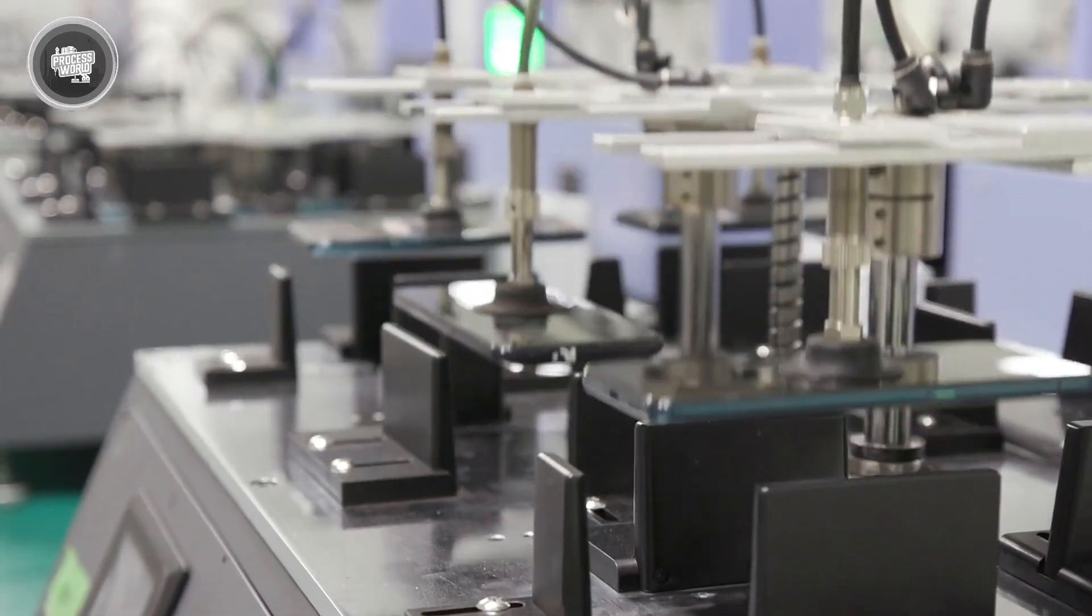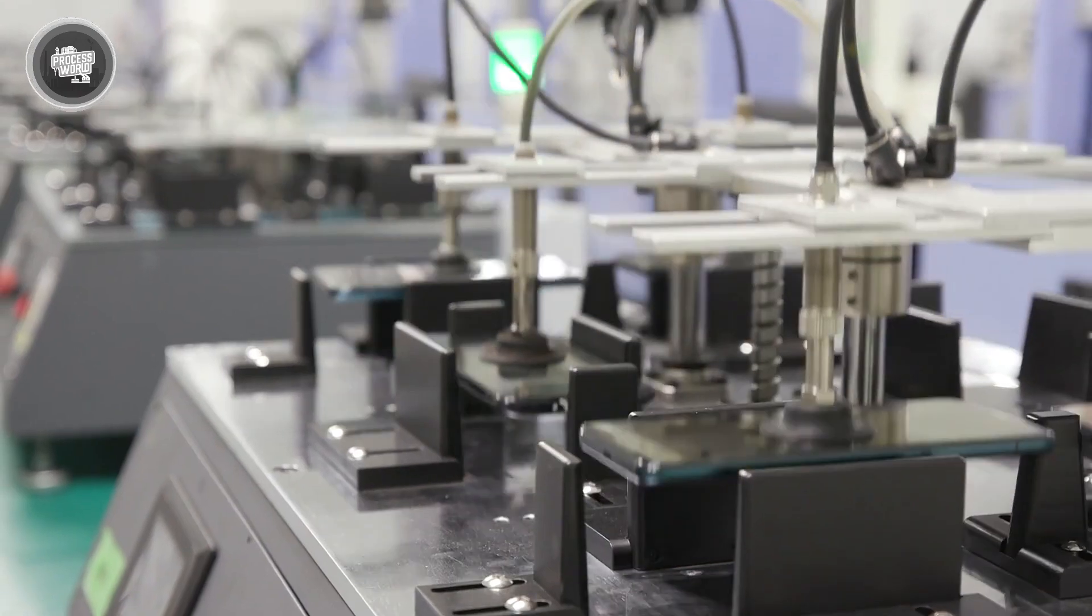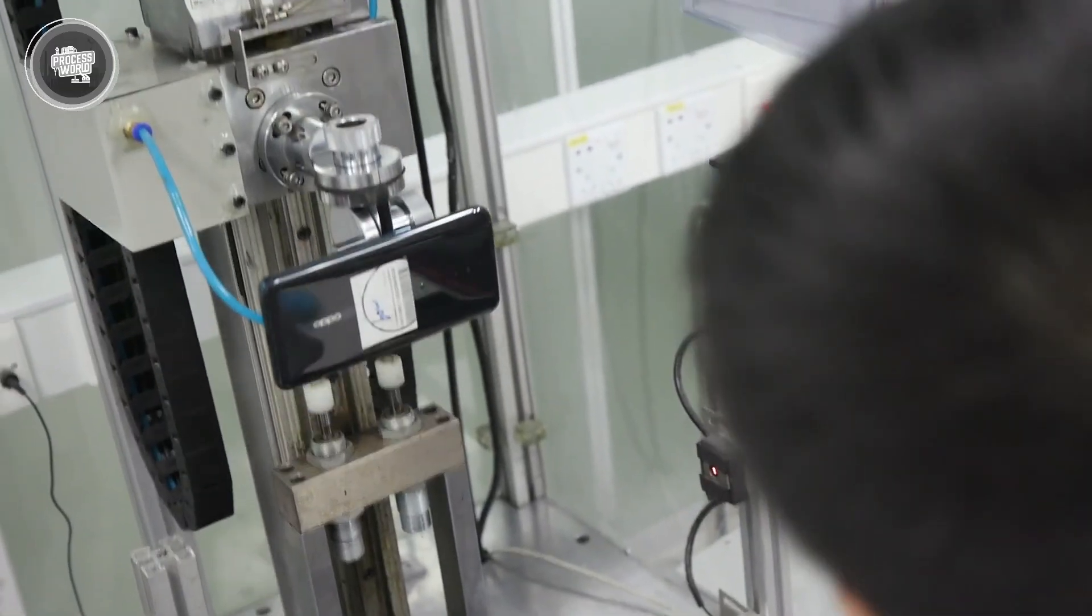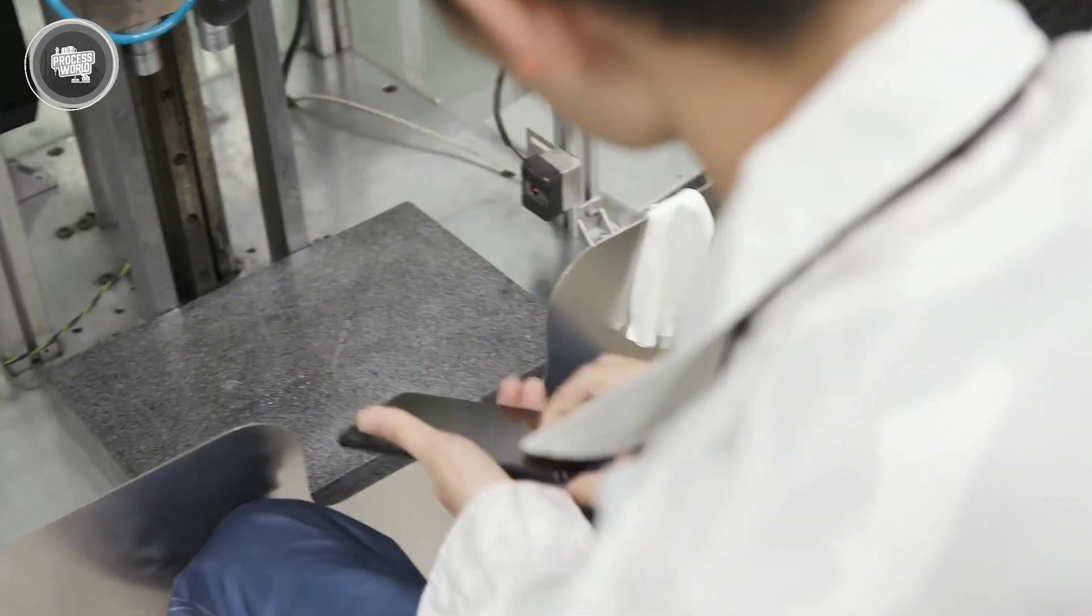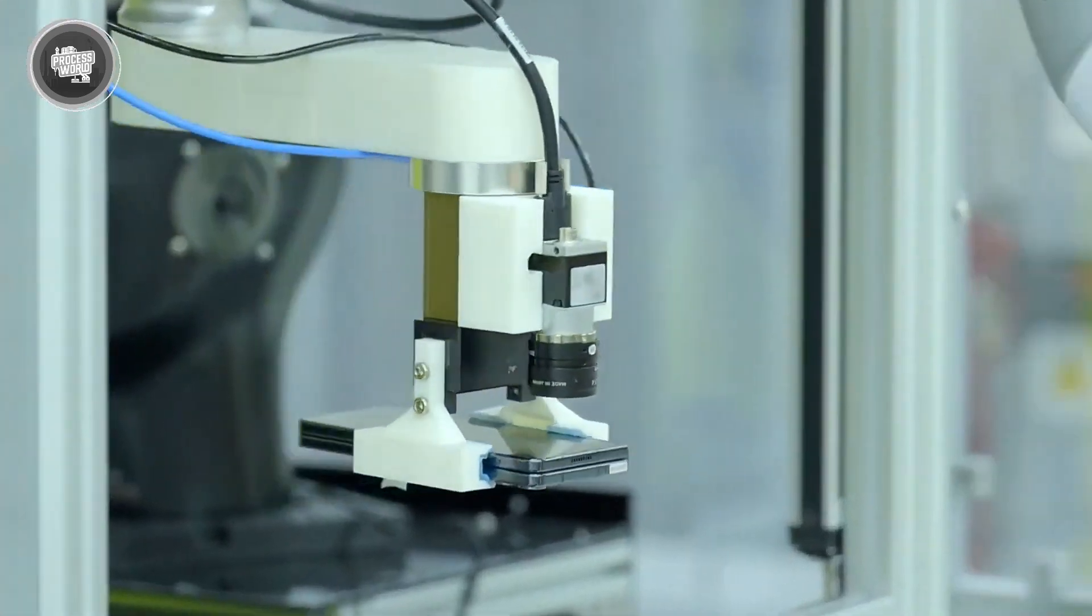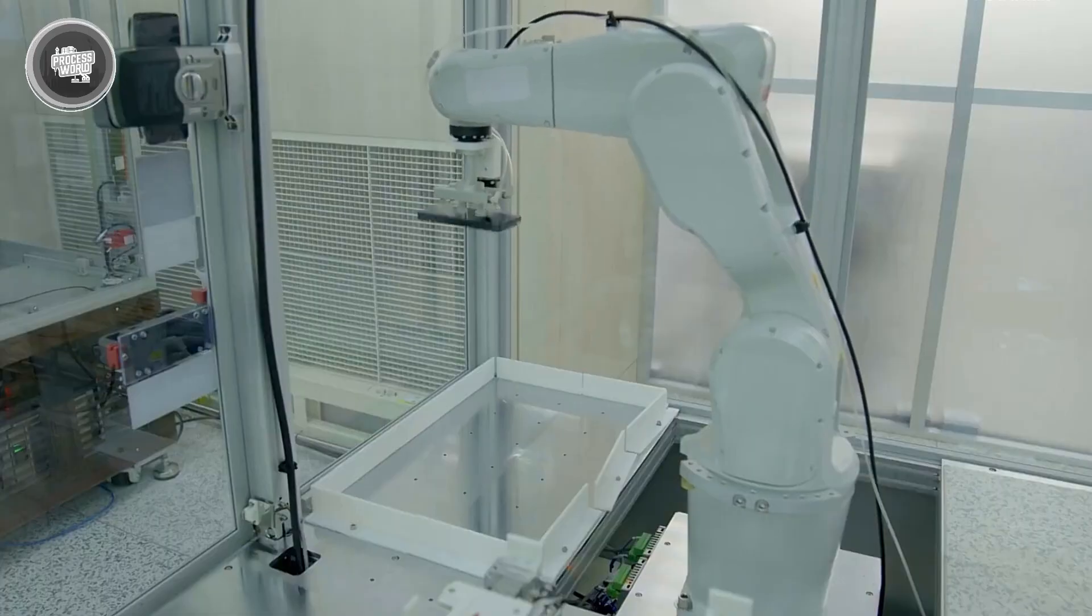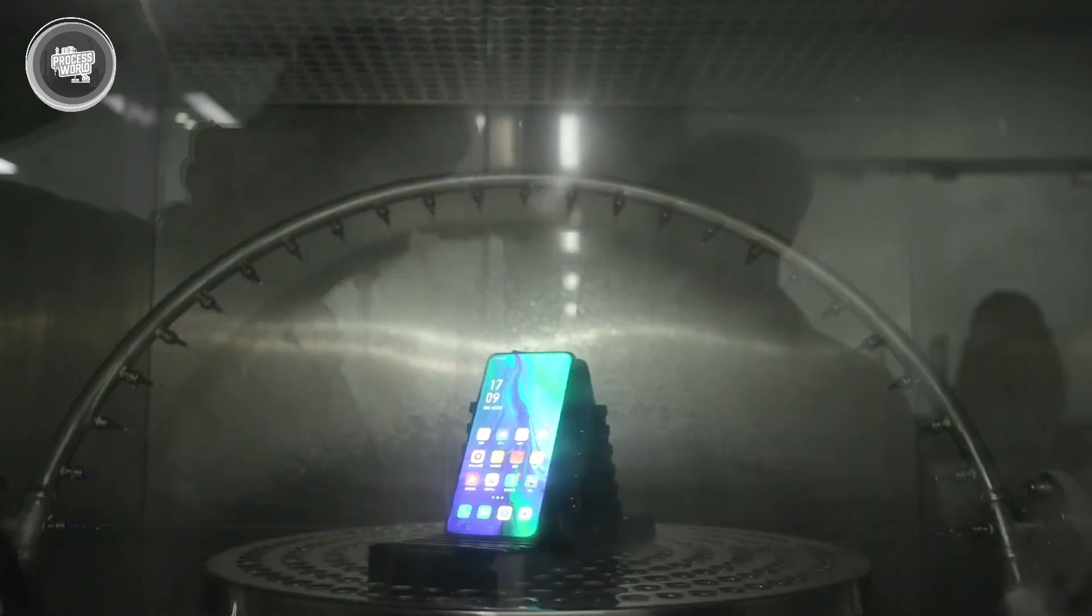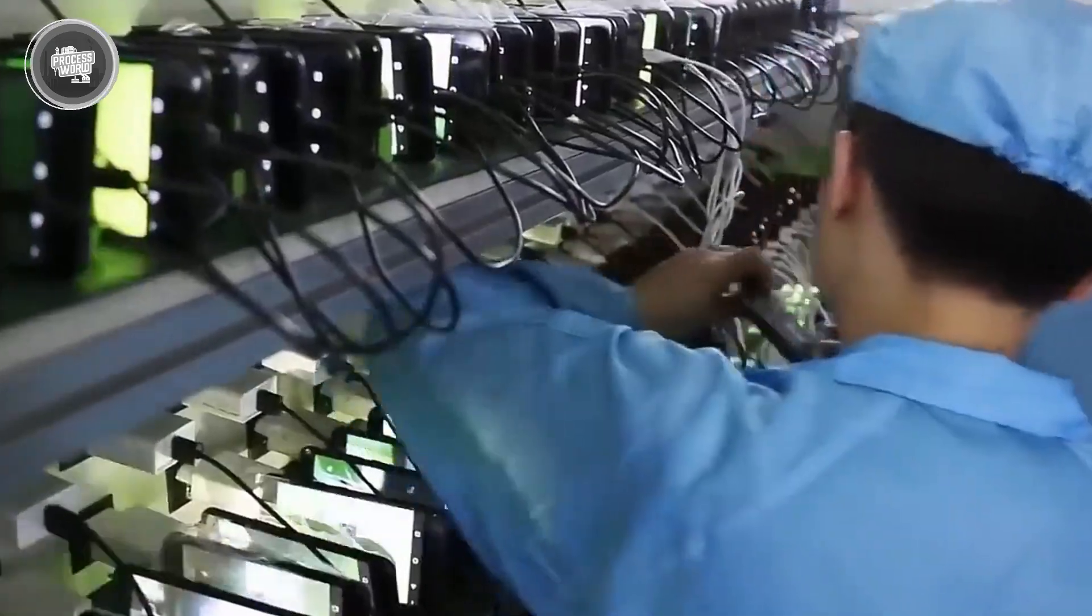Next up is durability testing. Random samples from every production batch are pulled aside for drop tests, bend tests, and vibration simulations. Some phones are dropped from different angles onto hard surfaces to see how they hold up. Others are put through machines that twist and flex them repeatedly to make sure the structure stays intact. Waterproof models go through a sealed chamber test to verify their IP rating. They're exposed to water sprays, moisture, and pressure to make sure no liquid gets inside. Even the charging ports are tested after these wet conditions to confirm nothing was damaged.